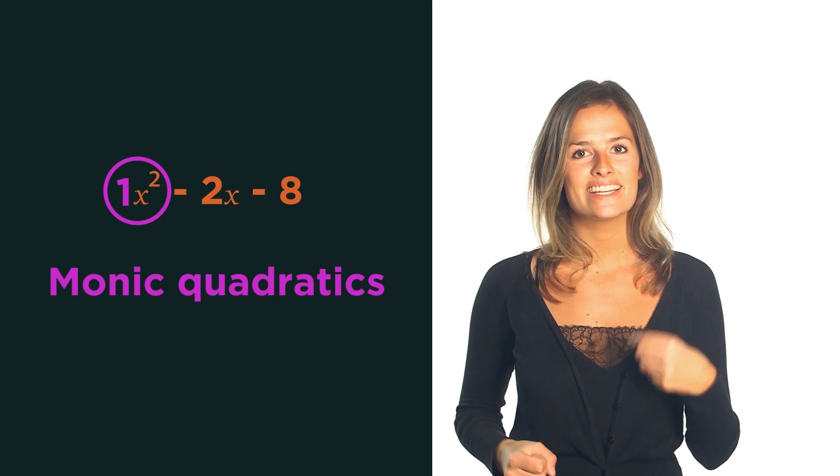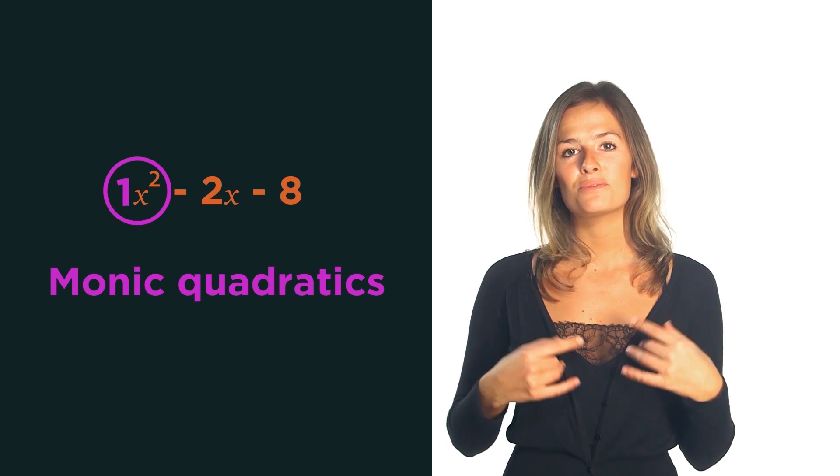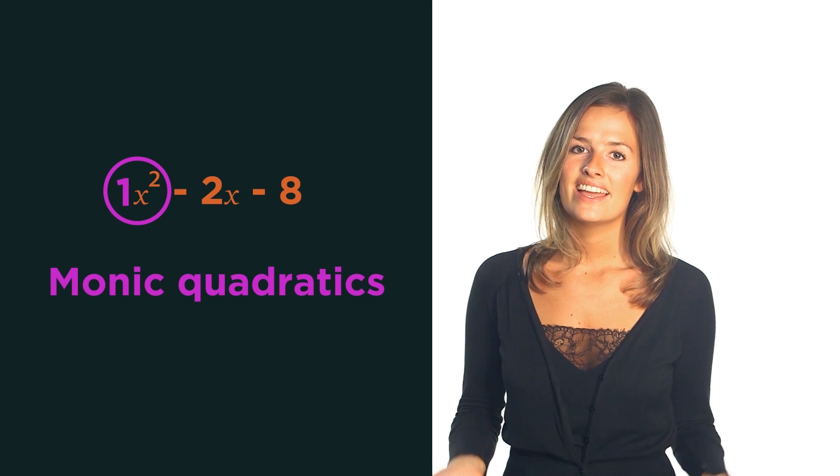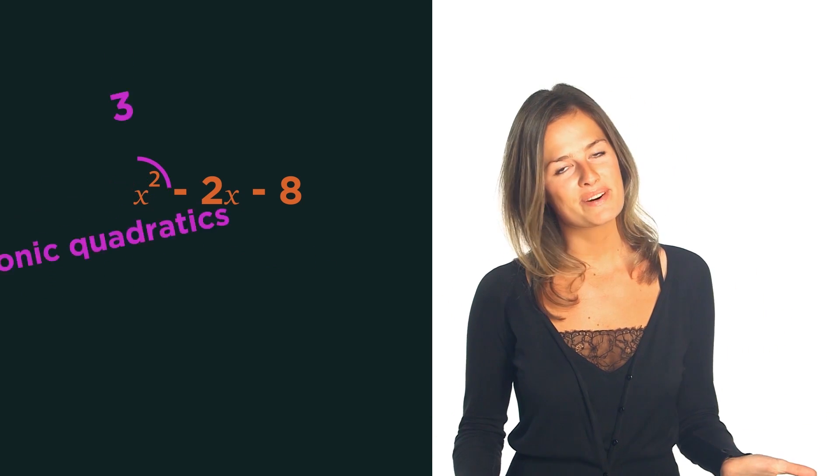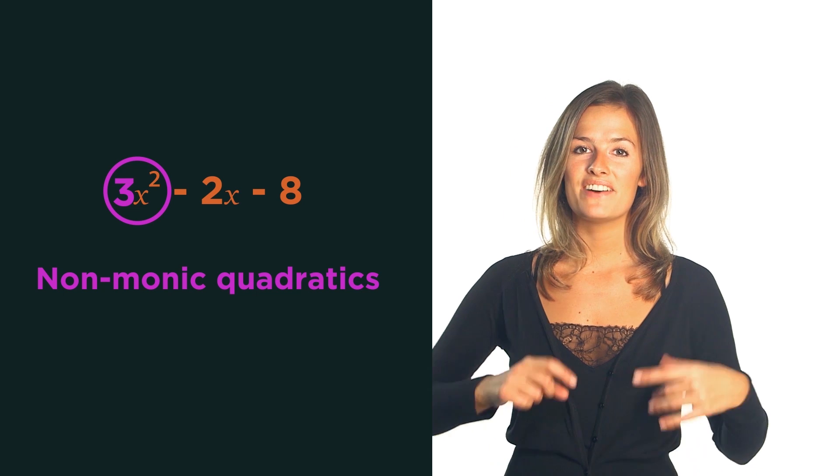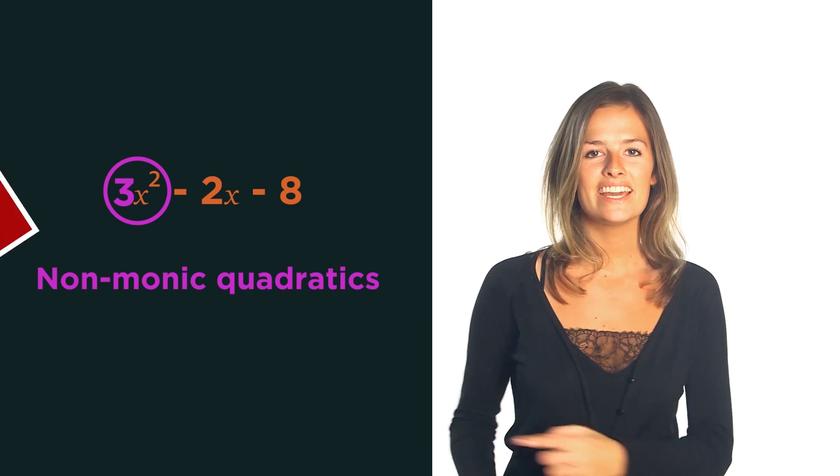So there we have factorizing quadratics when the coefficient in front of the x squared is one. These are called monic quadratics. If the coefficient in front of the x squared isn't one, they're called non-monic quadratics, and we'll discover how to factorize those in another video.